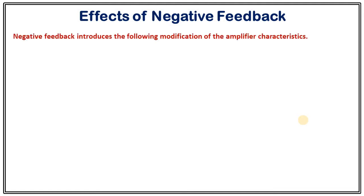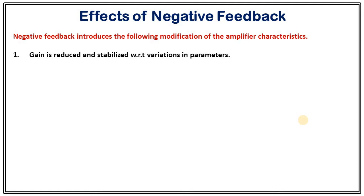Negative feedback introduces the following modifications to amplifier characteristics. The first one is that gain is reduced and stabilized with variation in parameters. Suppose we are making a negative feedback amplifier using a transistor, and we know that transistor characteristics change with temperature. In that case, gain may change, but under the effect of negative feedback, we can stabilize the gain with respect to that kind of parameter variation.